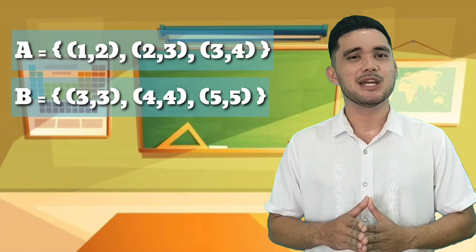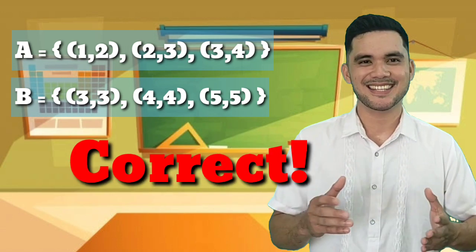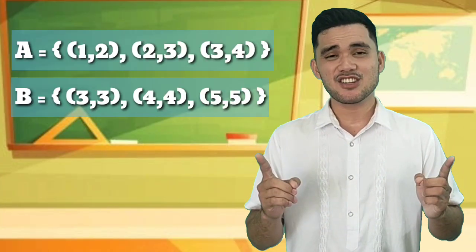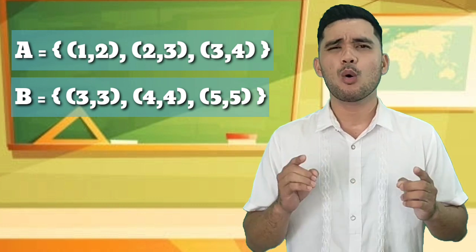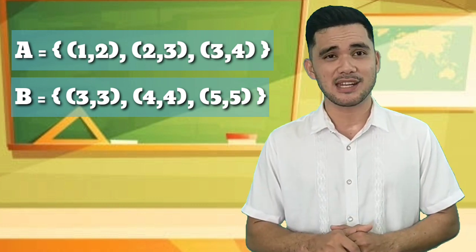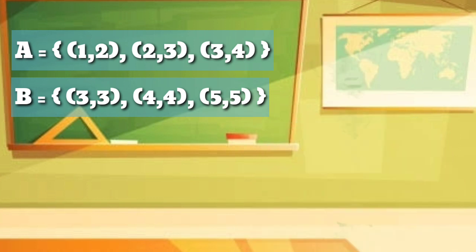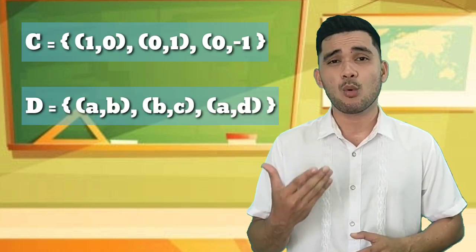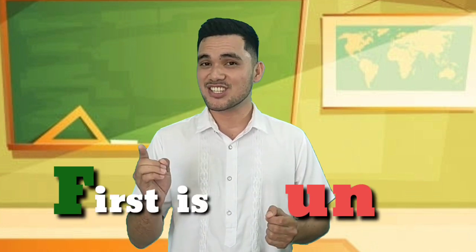If your answer is A and B, you are correct! A and B are functions because each element in the domain corresponds to exactly one element in the range — meaning the first elements do not repeat. Meanwhile, C and D are not functions because they contain ordered pairs with the same domain. In C, the number 0 repeats, while in D, letter A repeats. See, it's very easy. To identify if a relation is a function, just remember the word FUN — First is Unique.